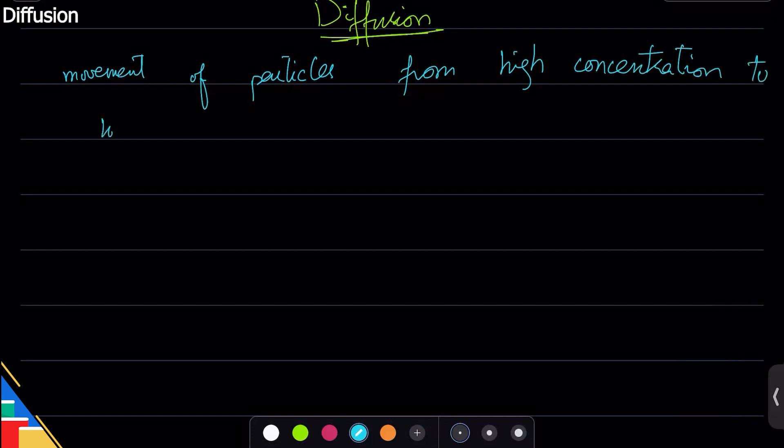In your book they also use the word region, which is fine if you use it or not. The region of high concentration - I mean the area where they have high concentration to area where they have low concentration.